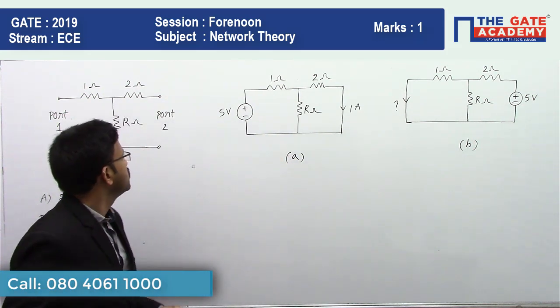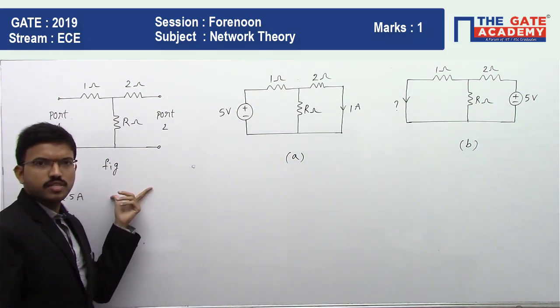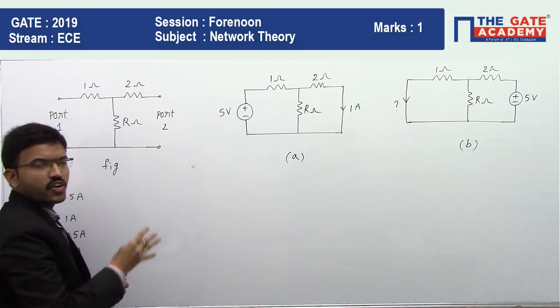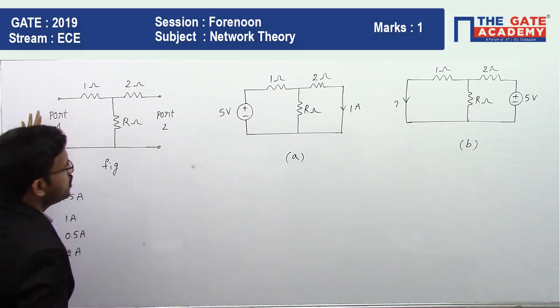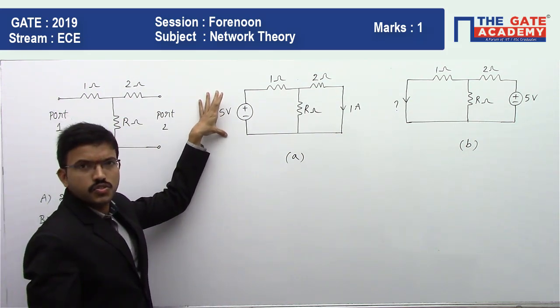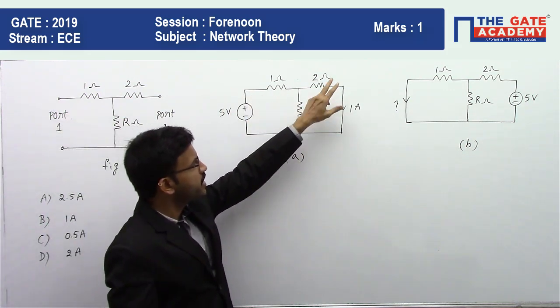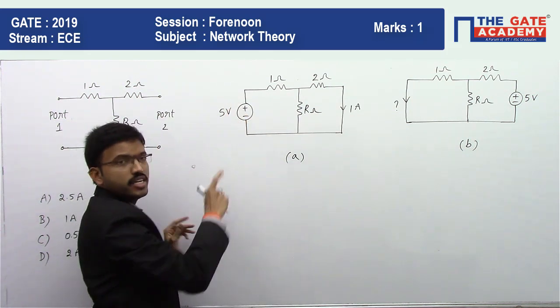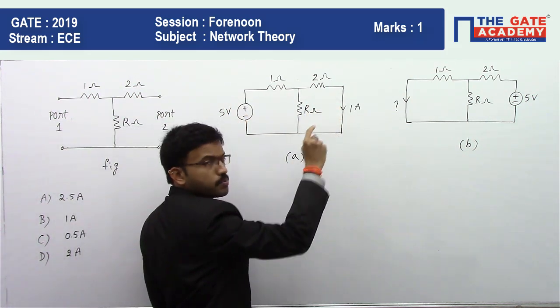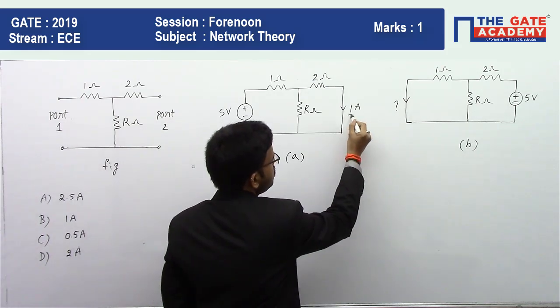See here, he has given the linear circuit diagram. This is a 2-port network. Now in the first case, what he has mentioned is that at port 1 he has applied a 5 volt source excitation and port 2 is shorted. When the 5 volt source is given here, the current flowing through port 2 is 1 ampere.